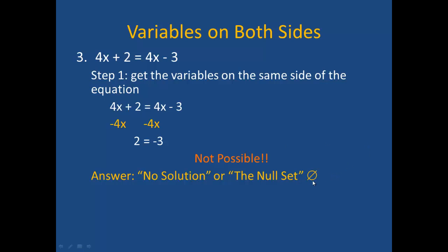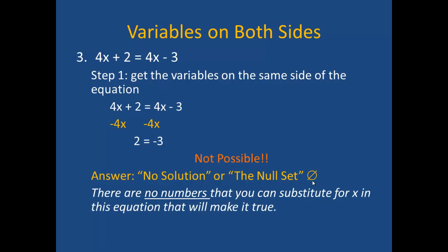You may recall that this is the symbol for null set. What this means is that there is no possible number that I could substitute for x into this equation that will make it true. So if I went back to my original equation, there is no possible number I could plug in for x and get a true equation. Therefore, there is no solution. If you have a problem like this, instead of having a number for an answer, you simply write the words no solution or the null set.